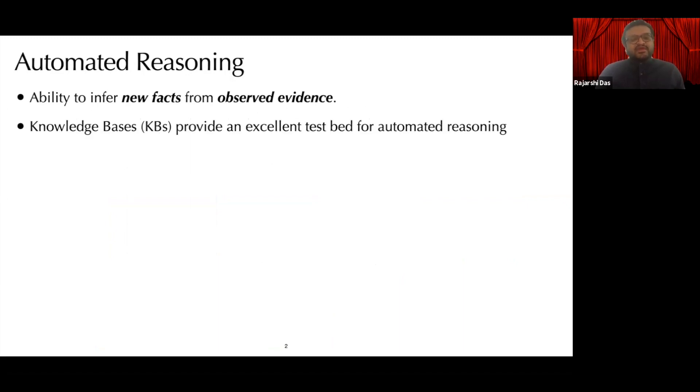Automated reasoning is defined as the ability of computing systems to infer new facts from observed evidence. We are interested in automated reasoning over large knowledge bases with rich and diverse semantic types. Knowledge bases provide an excellent testbed for automated reasoning.